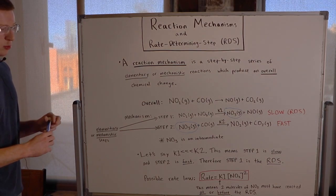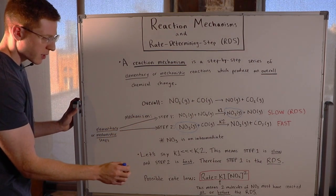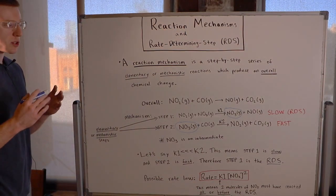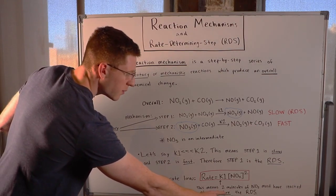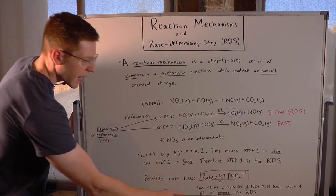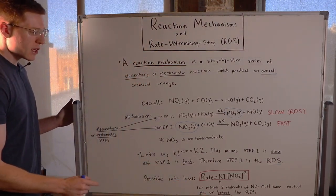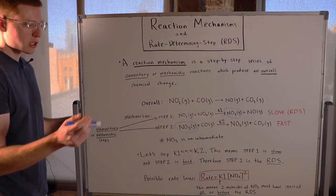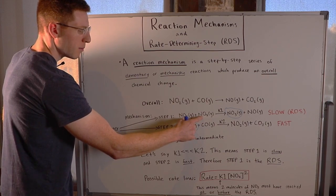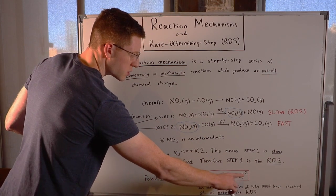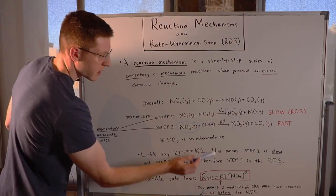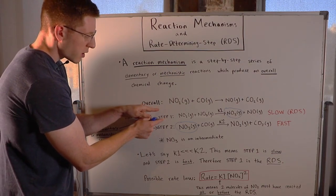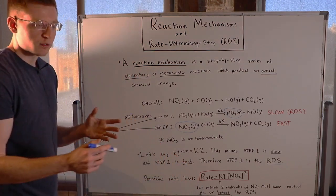This means that an overall possible rate law for this whole mechanism could look like this: rate equals K₁ times the concentration of NO₂ squared. This means that two molecules of NO₂ must have reacted at or before the rate determining step. So the overall rate law is going to be based on the reactants of our slow step. We have two molecules of NO₂ combining, which is why we have concentration of NO₂ squared, and we used K₁ as our rate constant because that was the rate constant for our slow step. If you write the rate law for your slow step, you've written the rate law for your overall reaction.